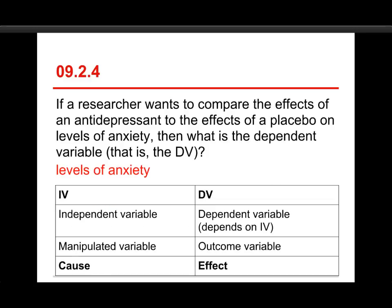Looking at the IV/DV table: the independent variable on the left is the manipulated variable — such as whether someone received a placebo or antidepressant — and it is the cause, expected to change scores on the outcome variable. The dependent variable on the right is called that because scores are supposed to depend on the participant's level in the independent variable. It's also called the outcome or effect. In this experiment, levels of anxiety are the effect — the thing expected to be affected by the type of manipulation received.